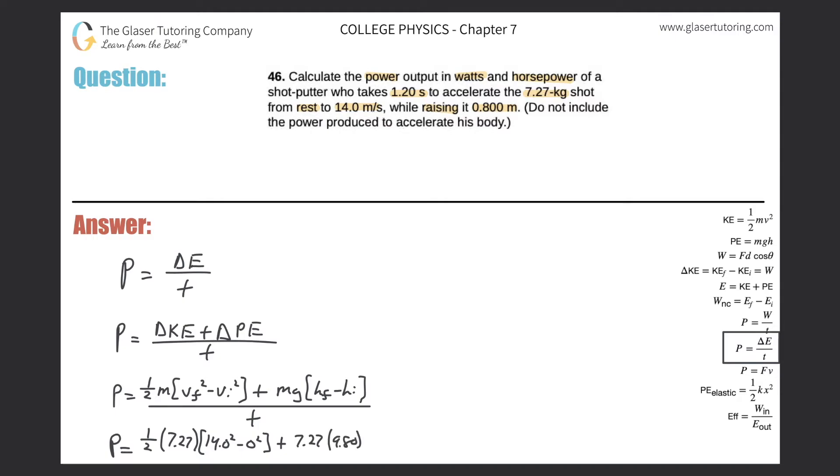Times g, which is 9.8, and then the height. The final height it was raised, I'll assume that it started at zero and therefore it had risen to 0.8 meters. So this is 0.8 minus zero. Now remember this whole thing is going to be divided by the time, and the time is 1.2 seconds. So let's now calculate.